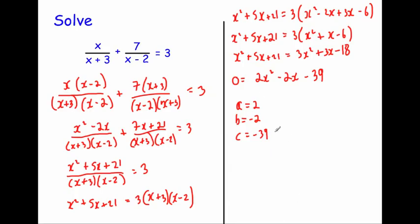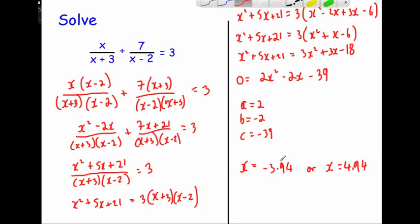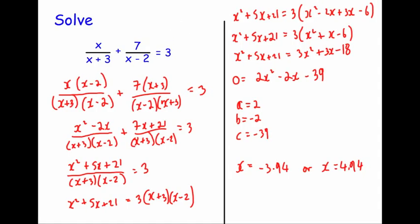I'll let you practice that, but the answers are x equals minus 3.94 or x equals 4.94 to two decimal places. The main points are: give the fractions a common denominator, put any expression with more than one term in a bracket, and be very careful with your algebra throughout.